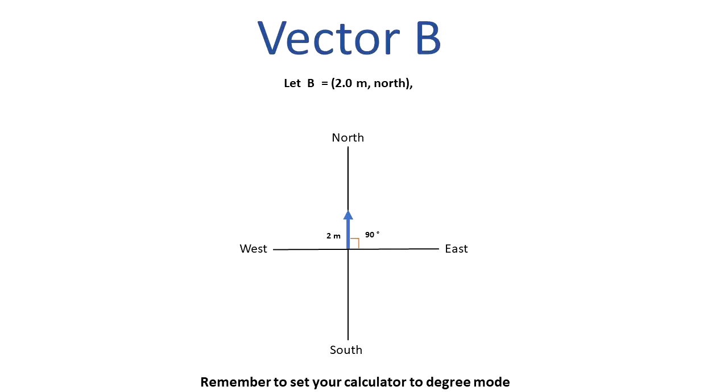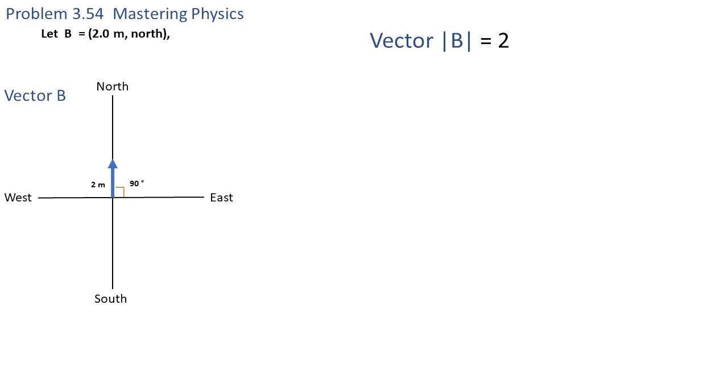Now let's analyze vector B. It has a magnitude of 2 meters to the north. This is completely to the north, which means there is 90 degrees between the x-axis and the vector.